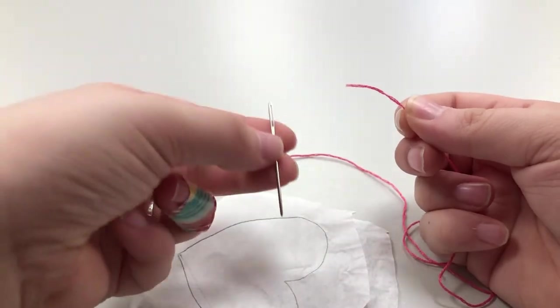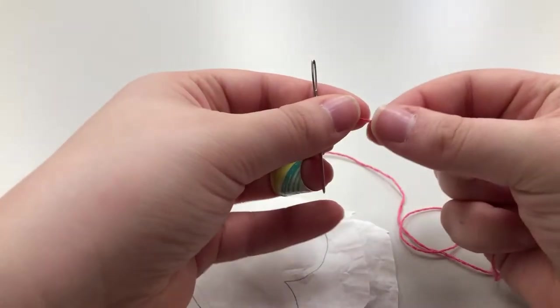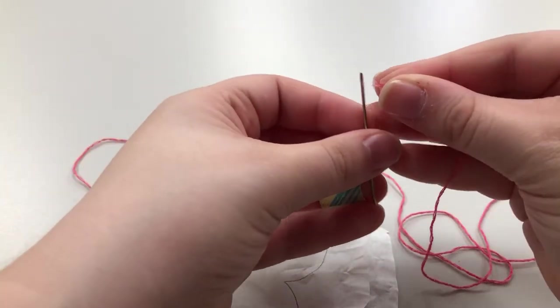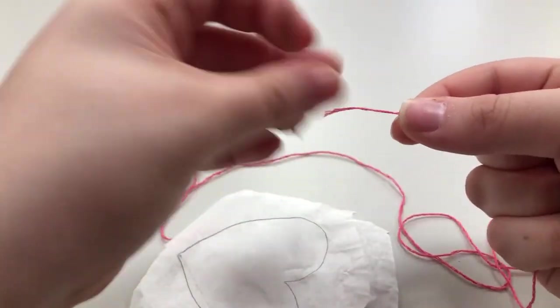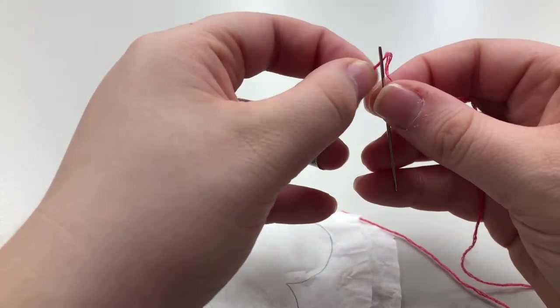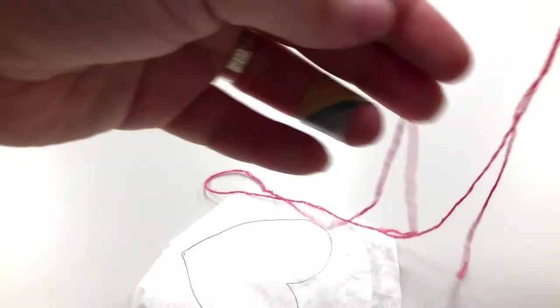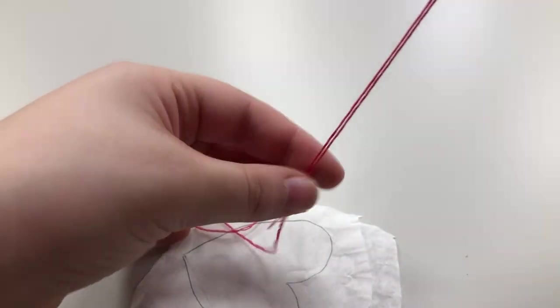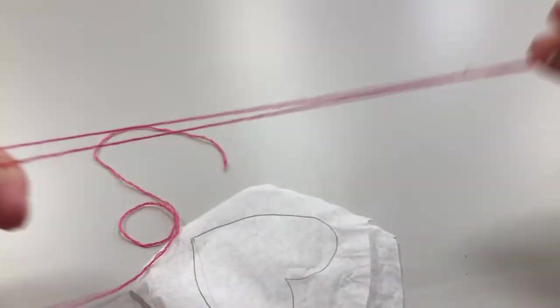The next thing we're going to do is thread our needle. This can be a little tricky. The thing I recommend if you're really stuck is you can always dampen your fingertips to help you keep that thread steady or you can even dampen the end of the thread. See so now it's a little damp so it sticks together a little more easily and you just pull it through. I recommend pulling it so you have this long end and then the end that goes through the needle is still going to go about halfway down on that long end just so it doesn't slip out of the needle.